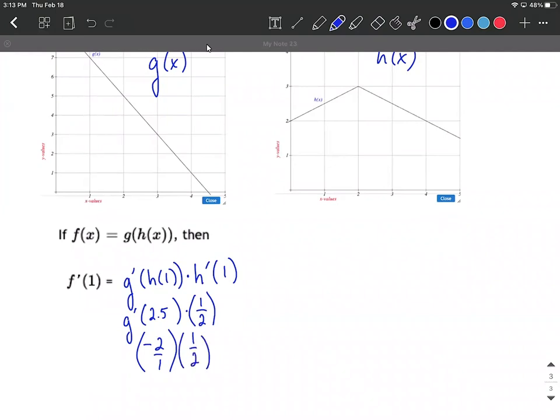And we'll plug in our 1/2. As we multiply these together, that's -2 over positive 2. Multiply numerators together, multiply denominators together, which simplifies down to be -1.